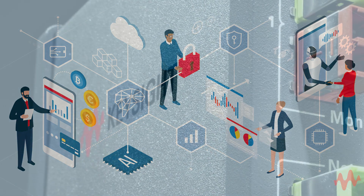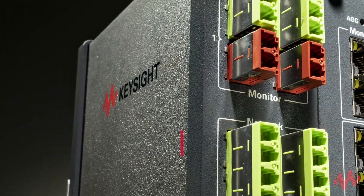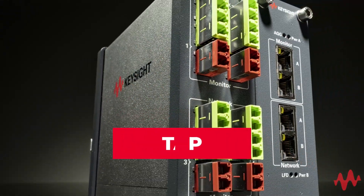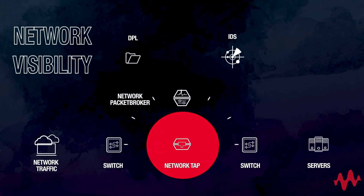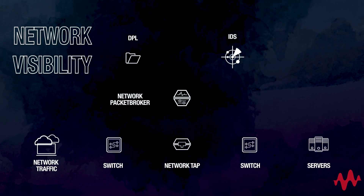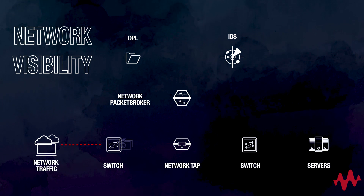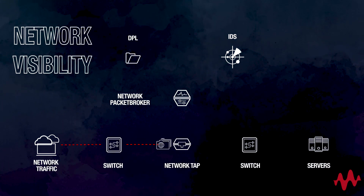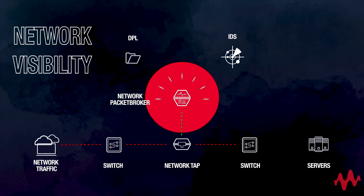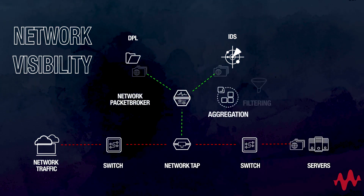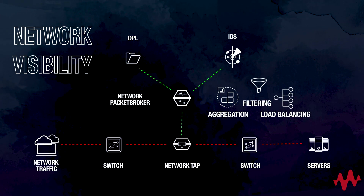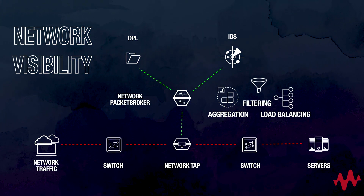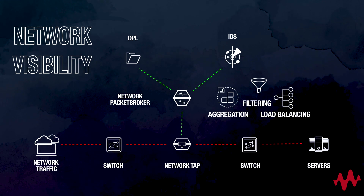To create a visibility architecture, first you need a TAP or SPAN port so that you can access monitoring data. A TAP is recommended because you can place it anywhere in the network you want. Between the TAP and tools is where the packet broker sits, so it can manipulate the data and send the tools just the data they require and nothing extra.